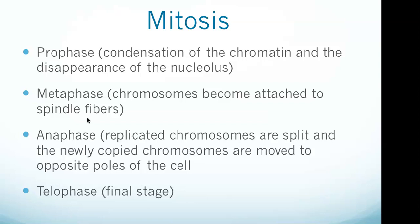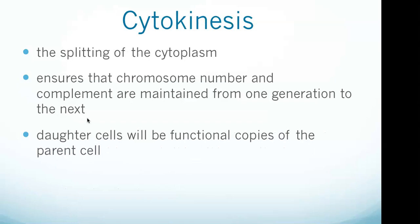During telophase, a nuclear envelope is reassembled around each set of chromatids, the nucleoli reappear, and chromosomes begin to decondense back into the expanded chromatin present during interphase. Cytokinesis is the splitting of the cytoplasm. During cytokinesis, the spindle apparatus partitions and transports duplicated chromatids into the cytoplasm of the separating daughter cells, ensuring that chromosome number and complement are maintained from one generation to the next. After the completion of telophase and cytokinesis, each daughter cell enters interphase.